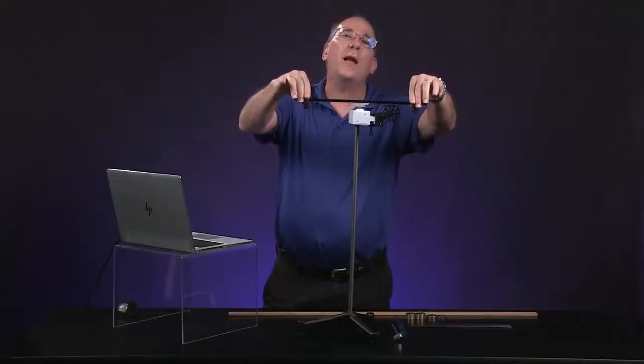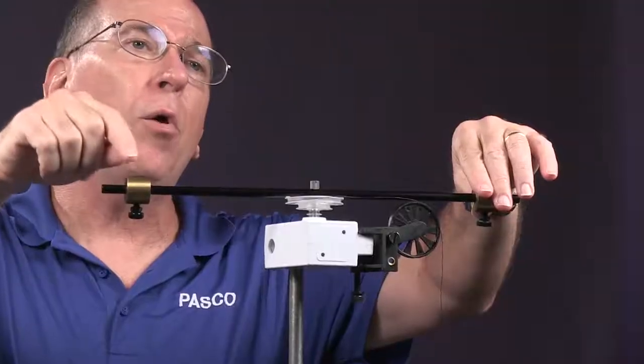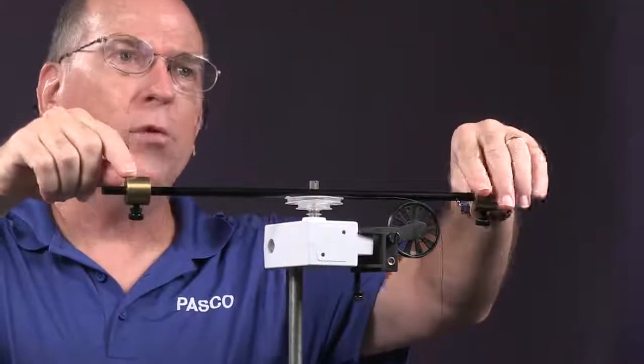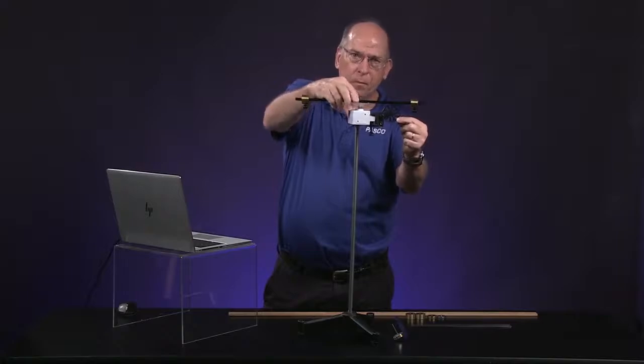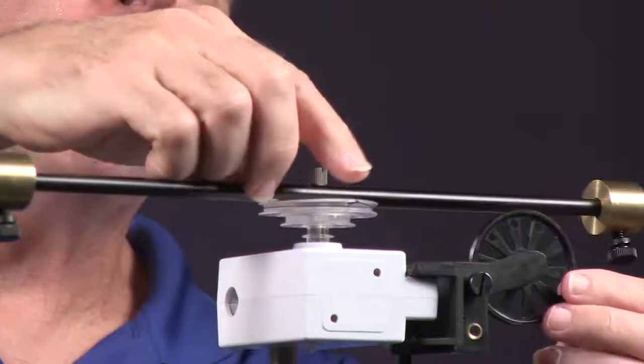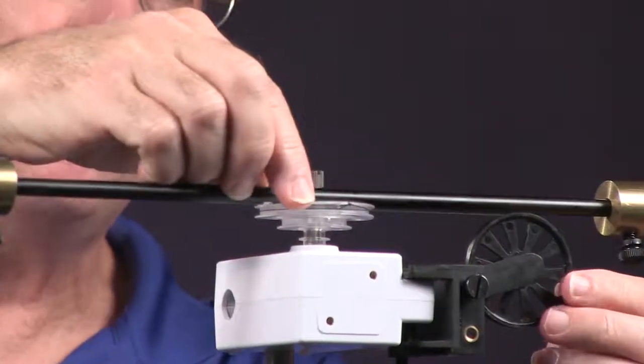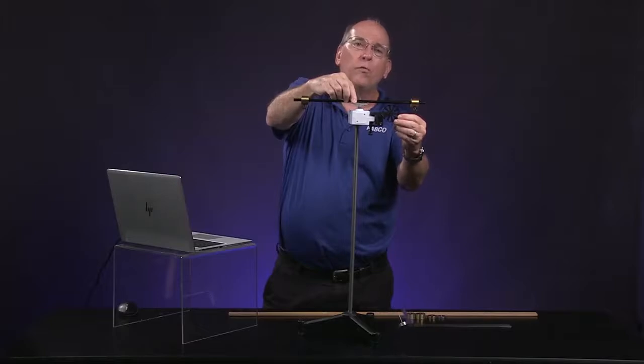Each sliding mass is 0.075 kilograms. The length of the rotating arm is 0.381 meters. The radius of the pulley where the string is wrapped around is 0.024 meters.